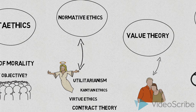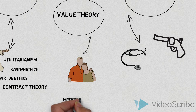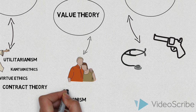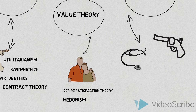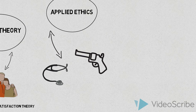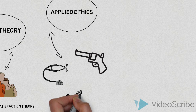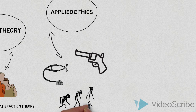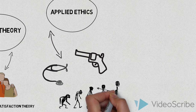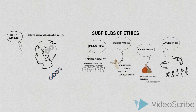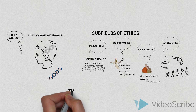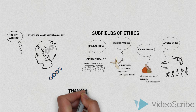In the section on value theory, we'll examine theories of well-being, including hedonism, desire satisfaction theory, and objective list theories. Finally, in the section on applied ethics, we'll look at the morality of issues such as human enhancement, gun control, and euthanasia. Thank you for watching, and I hope this video piqued your interest in the field of ethics.